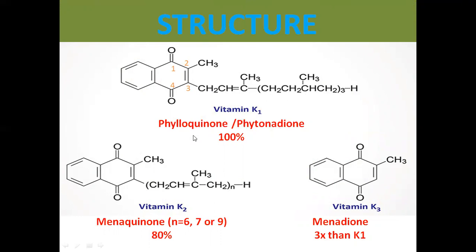From Vitamin K1 we move to Vitamin K2, which is found in animal sources. Vitamin K2 also has the naphthoquinone ring structure. At carbon number 3, a different radical is attached.